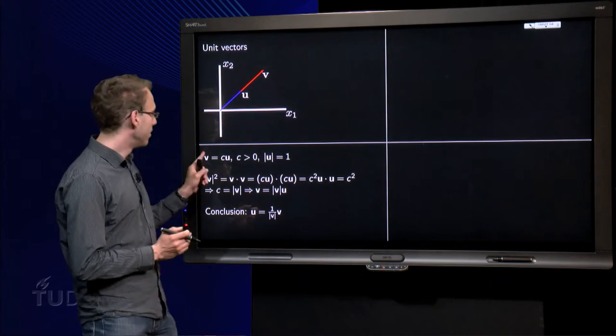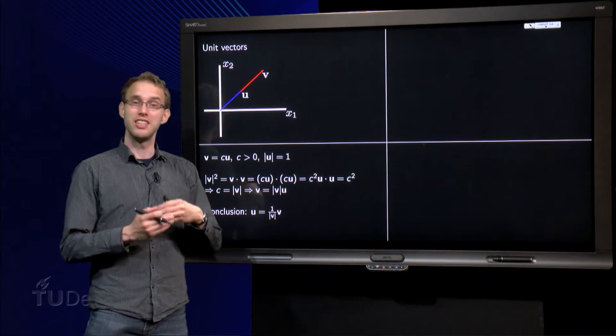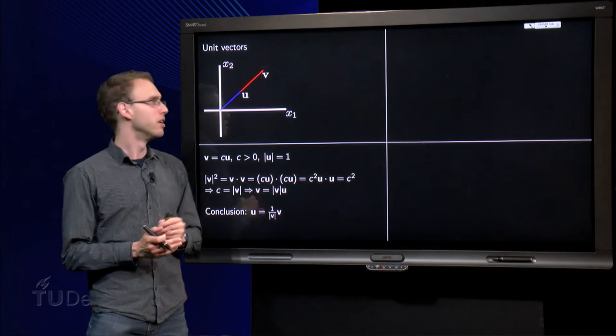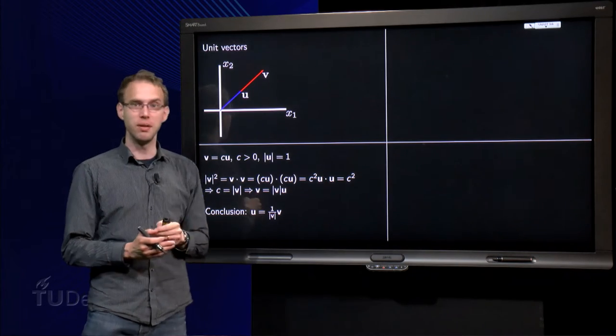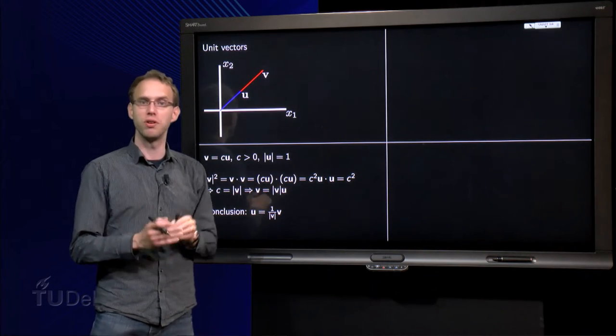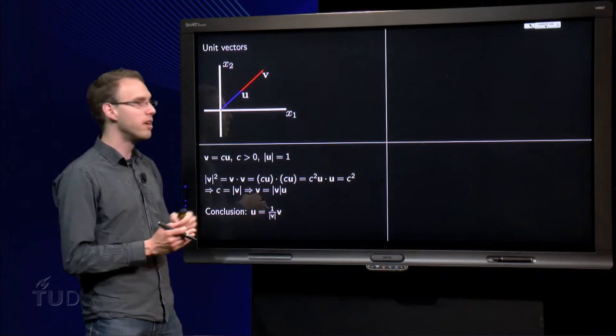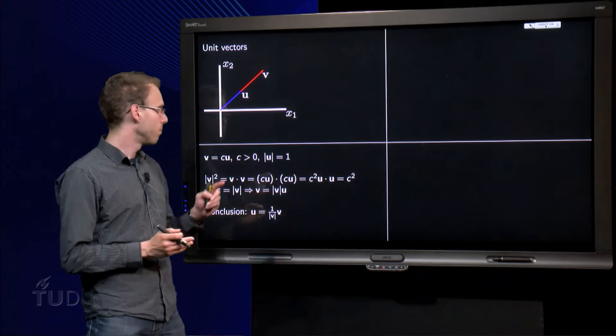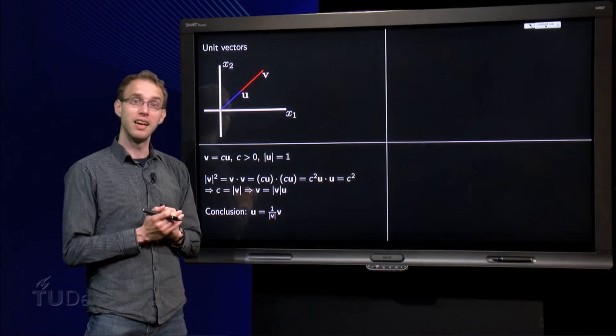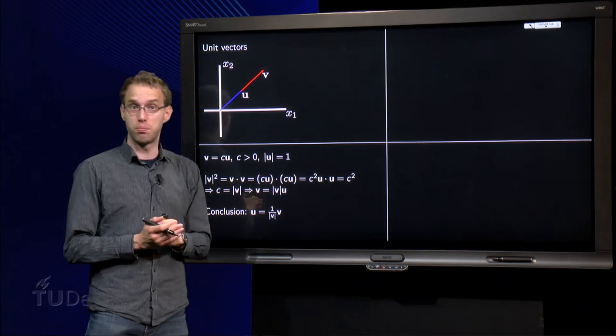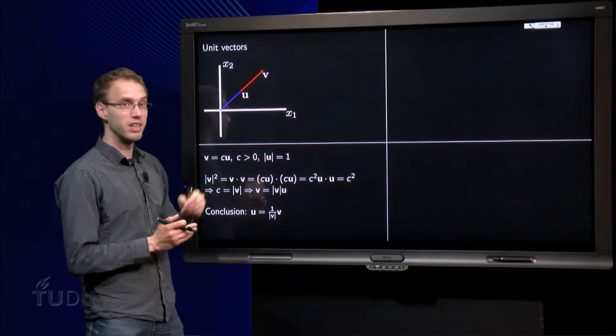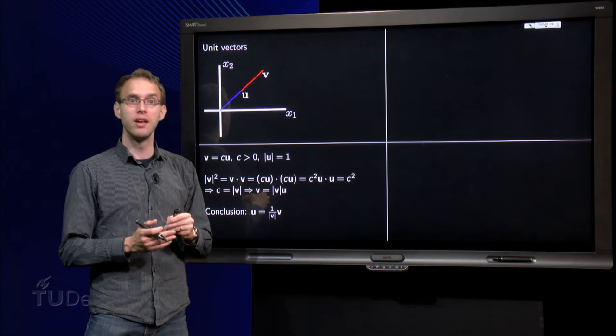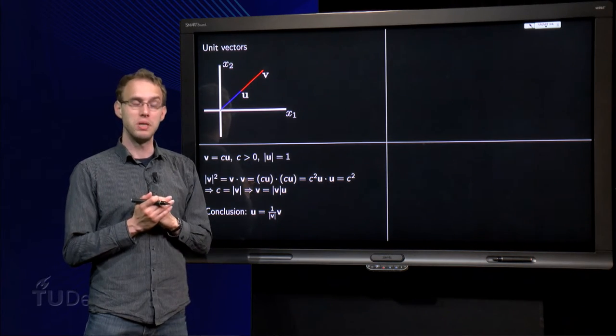Well, let's see. We know that v is in the same direction as u, so v is a multiple of u. So in this case the c in between would be something like 2 or 2.5 in this picture. But we don't know c, we don't know u. So how are we going to find u? We know that c is positive, because v and u are in the same direction, and we know that the length of u equals 1.